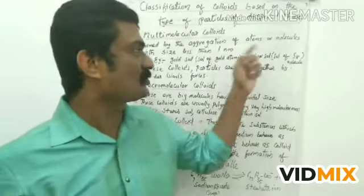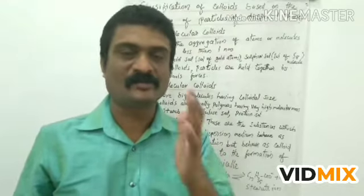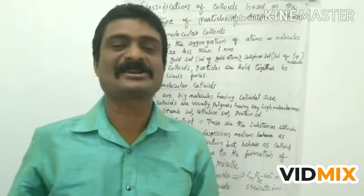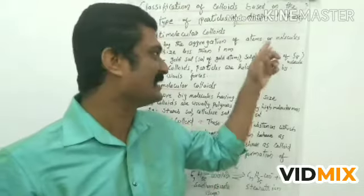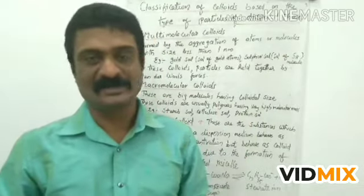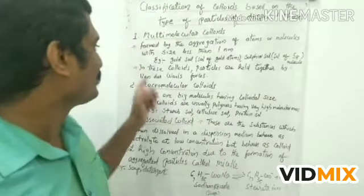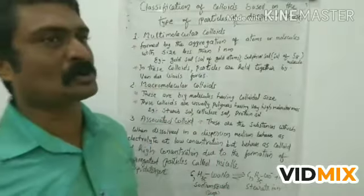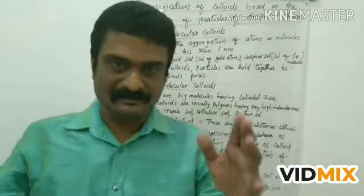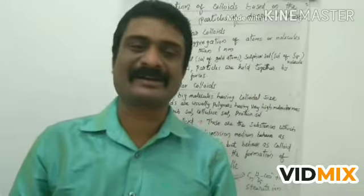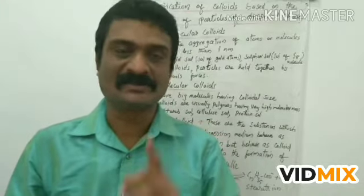Sulfur sol — the sulfur colloidal particle is formed by the aggregation of a large number of sulfur molecules, that is S8 molecules. In multi-molecular colloids, the atoms or molecules are held together by weak van der Waals forces.